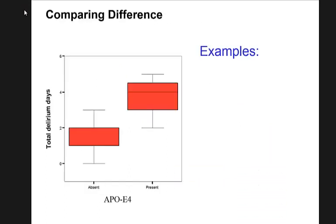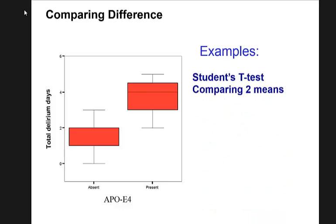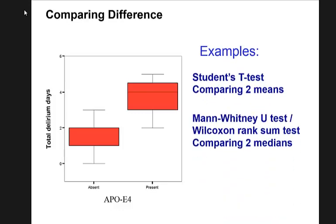If you have two groups of patients and are comparing, for example, mean delirium days between patients with and without ApoE4 gene, you are comparing two groups — that's looking at difference rather than correlation. Then you might want to use the student t-test or Mann-Whitney U test.